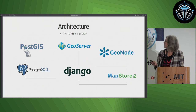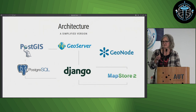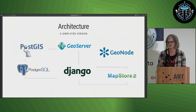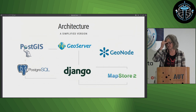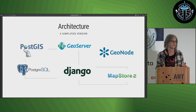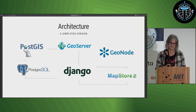A brief overview of its architecture — a simplified version — it has a GeoServer Django backend, so Python. The MapStore is the frontend, which uses React and OpenLayers. MapStore and GeoNode are built by a company called GeoSolutions, who are an Italian-based company — all open source.